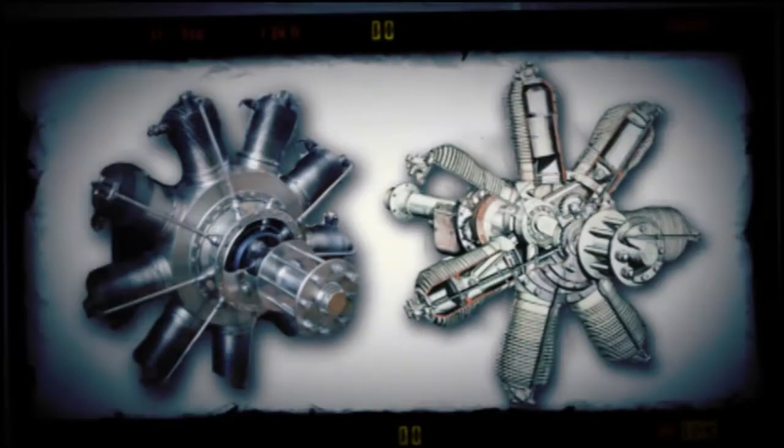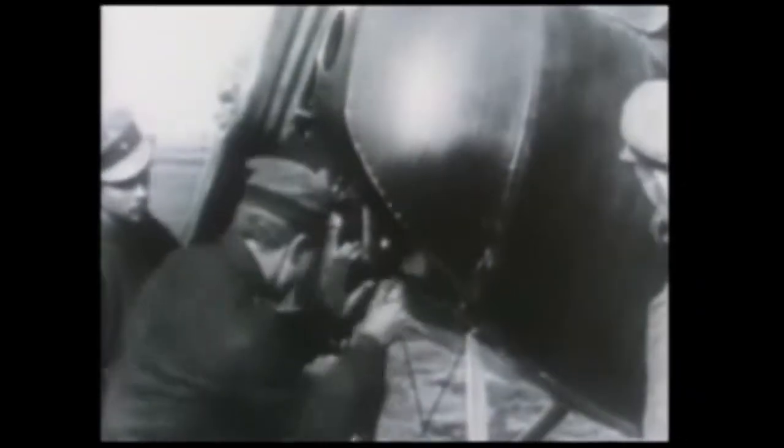Early carburetors had solid cork floats. Solid cork wouldn't leak, but it would absorb fuel and then became too heavy to work right.